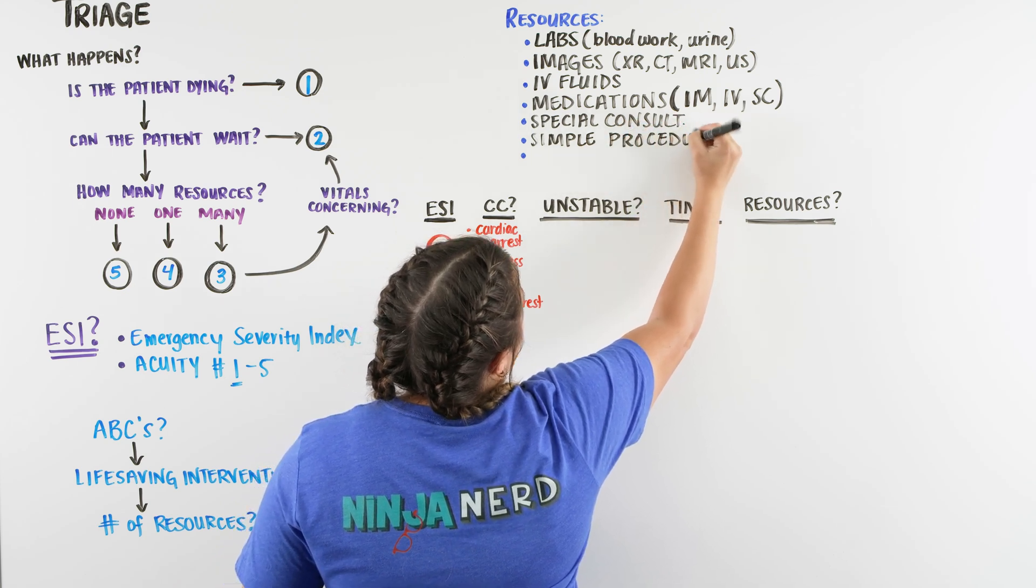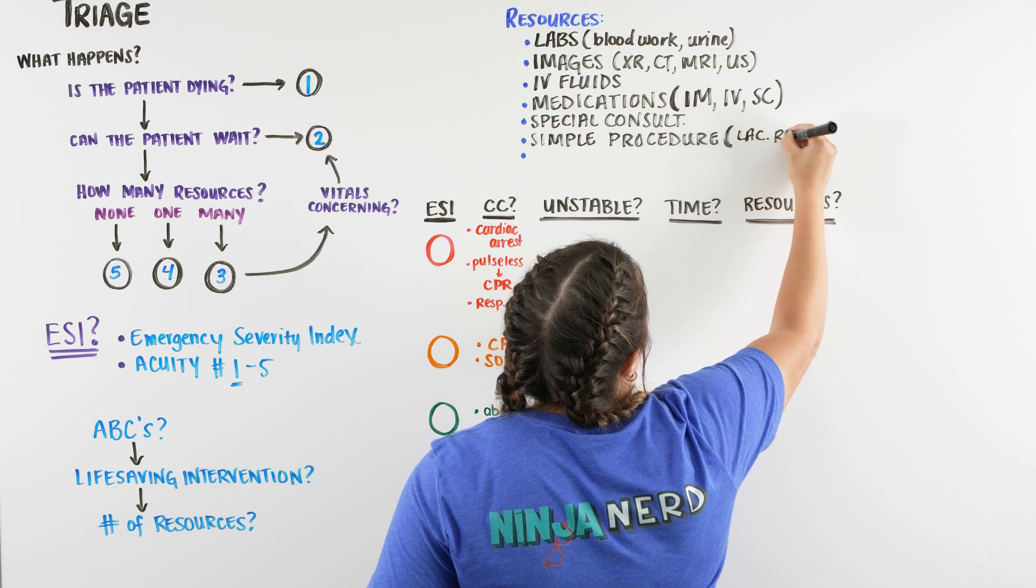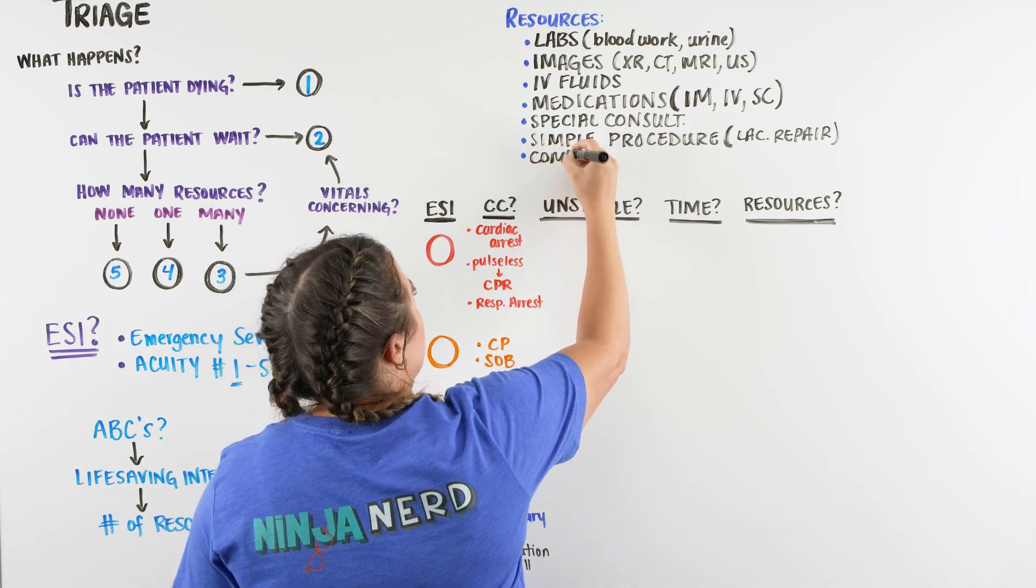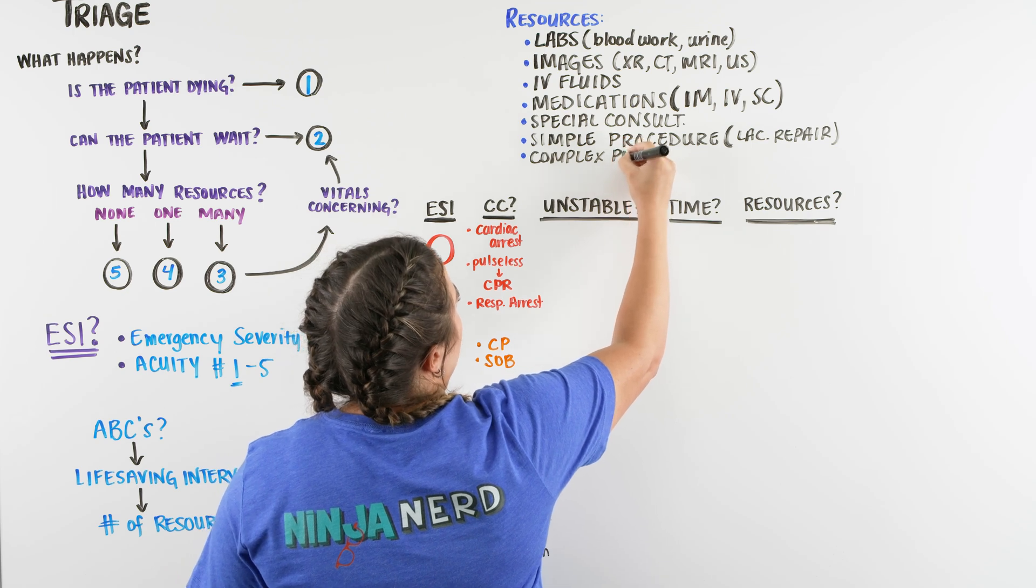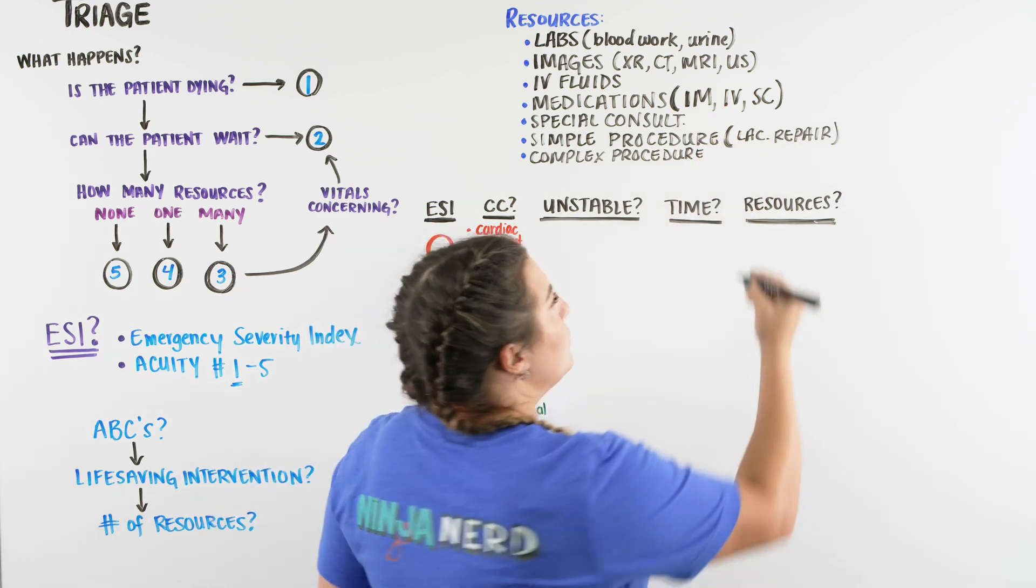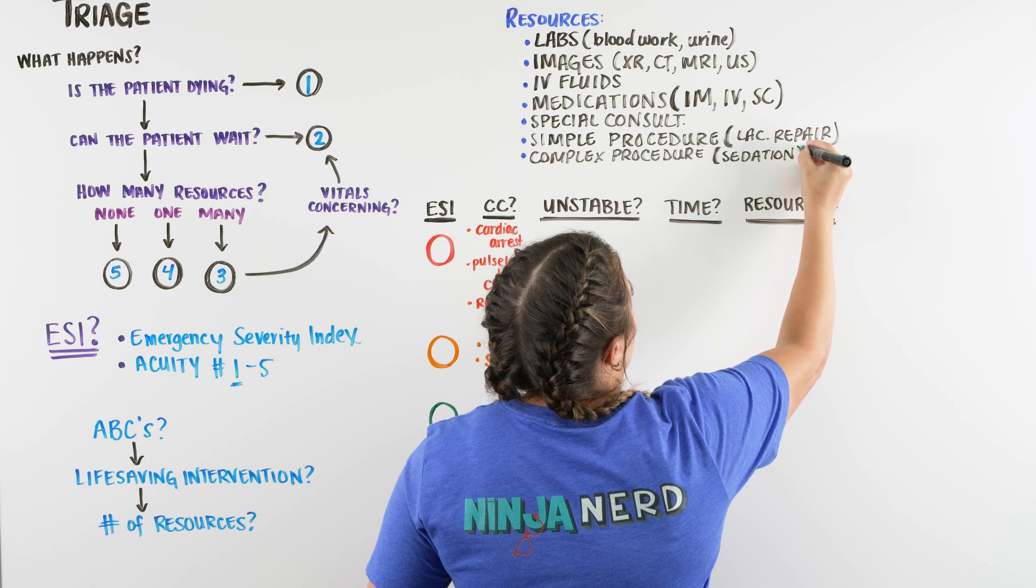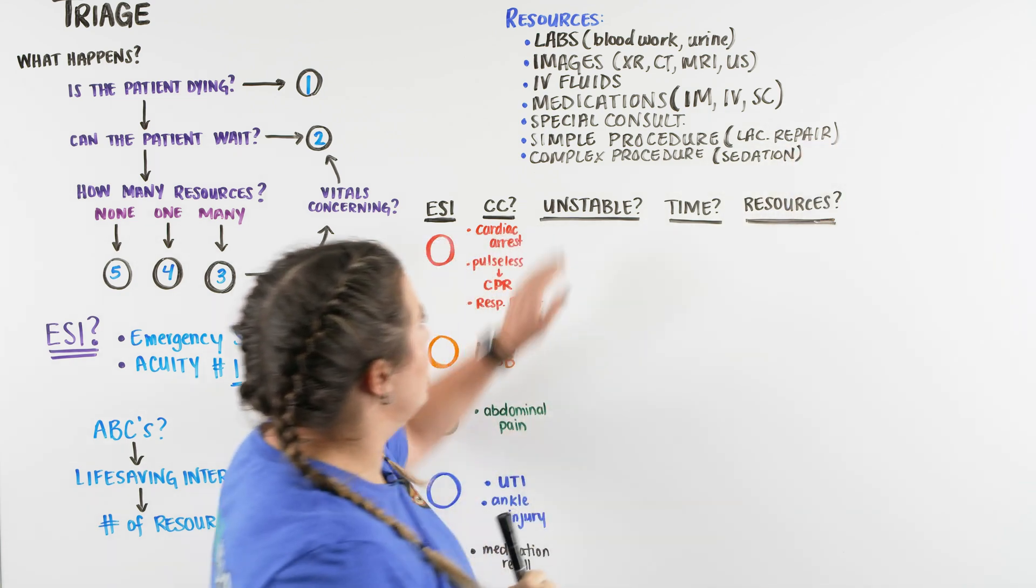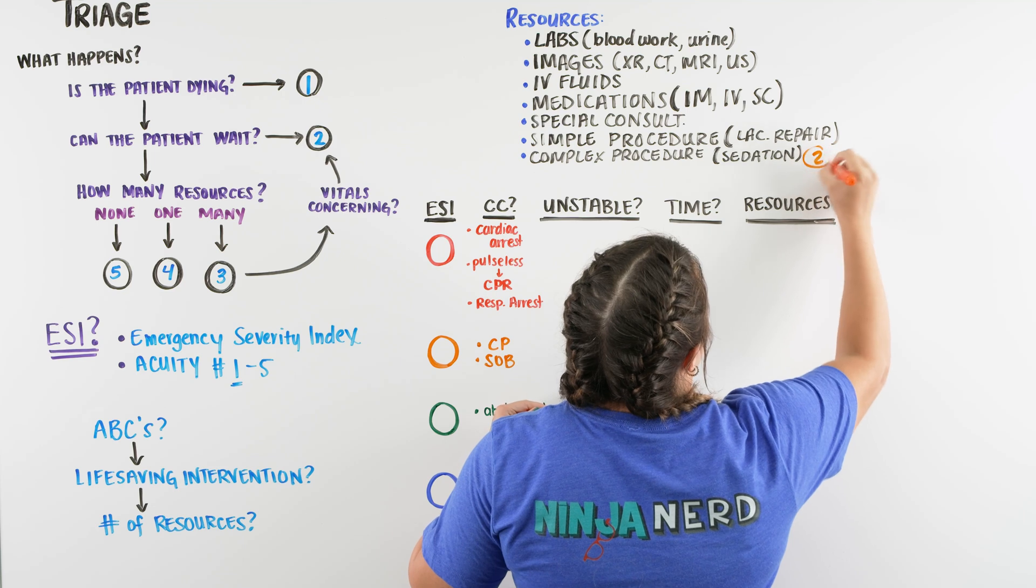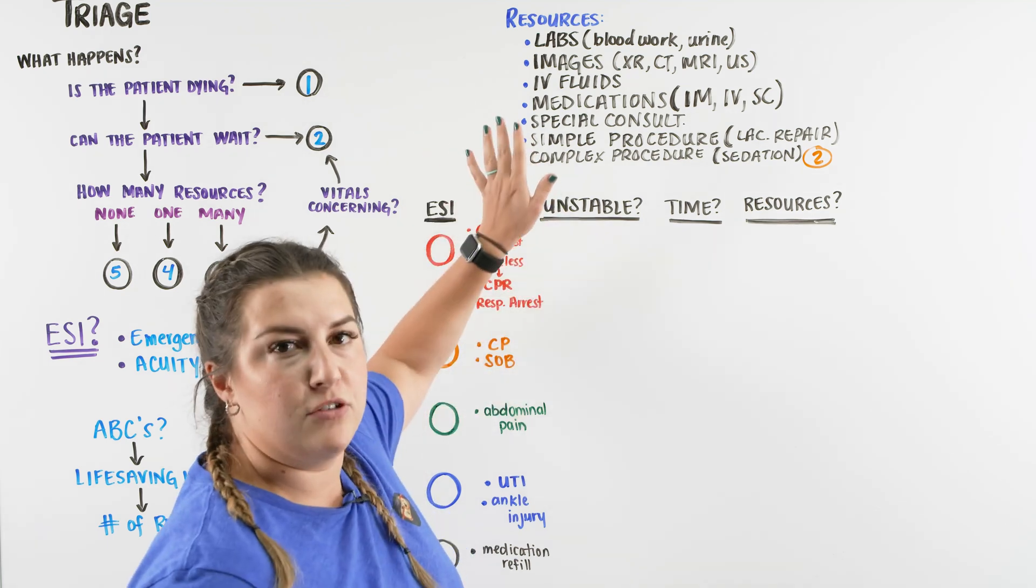And then there's another category that we want to think about is a simple procedure. And this resource is considered something like a laceration repair. And then our complex procedure. So if you've worked in the ER or you've ever done some shadowing in the ER, you may have heard of something called a conscious sedation. So if there is some sort of sedation needed, maybe to reposition a joint back, you would consider this not only one resource, but actually two. Because you may need a little bit extra hands on deck for that resource.